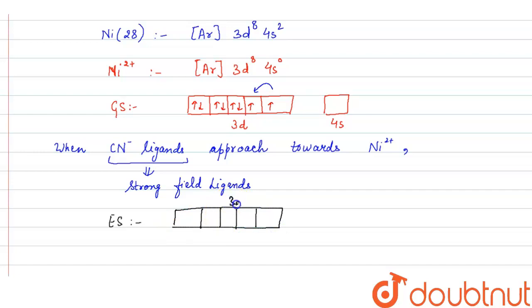We have this 3d, in this pairing of electrons takes place, and here 4s is empty. Then after we have 4p which is also empty, it is vacant. Now we have 5 cyanide ligands.